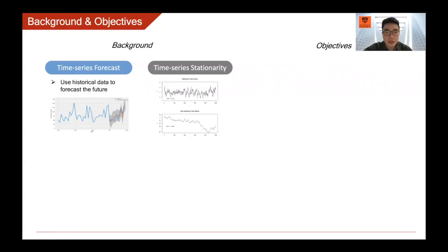Stationary time series data, as shown in the line chart, have two characteristics. First, statistical properties do not change over time. Second, sliding windows of the same size have the same distribution, while non-stationary data do not have these two characteristics.